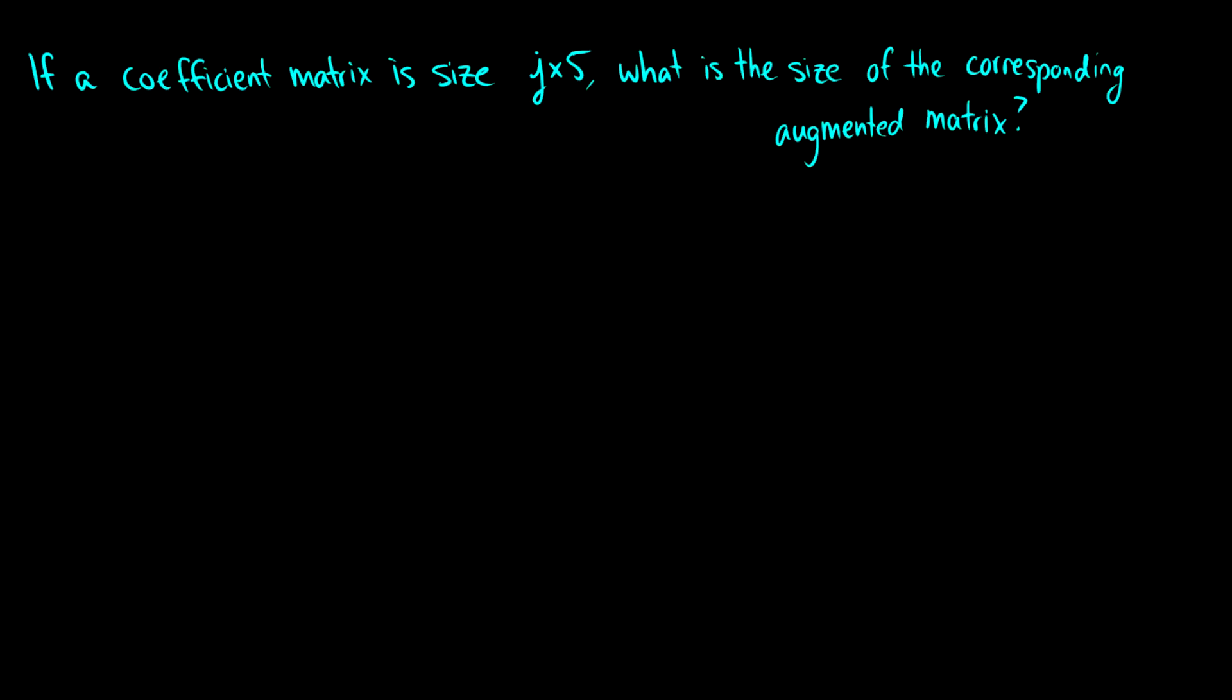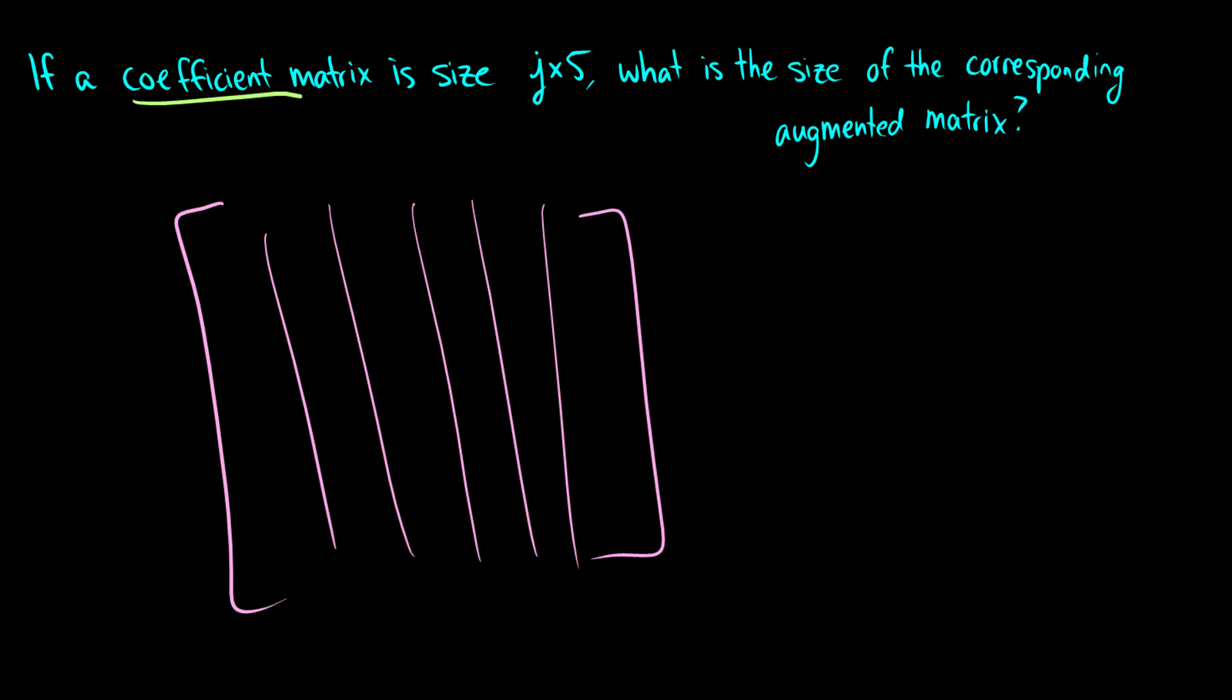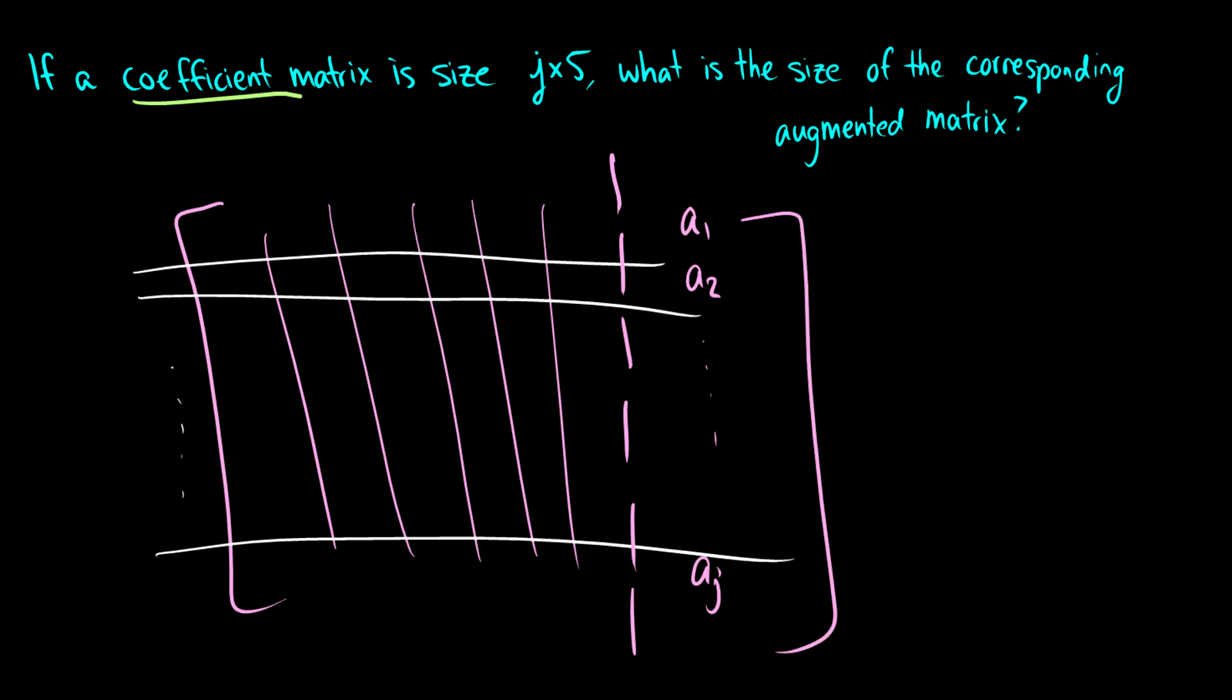So here's a question for you. If a coefficient matrix is j by 5, so j rows by 5 columns, what's the size of its corresponding augmented matrix? So for a picture here, there's 1, 2, 3, 4, 5. And there's j rows, so we have a couple rows there. We don't know how many rows are there, but it's that. So how many rows and columns does an augmented matrix have? Well, remember, an augmented matrix just adds the right-hand side of the equation into the mix. So we get some numbers here, we get like a1, a2, all the way down to aj, and then it closes off. So what that means is we get one more column. So that's going to be j by 6.